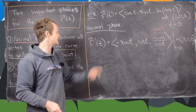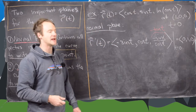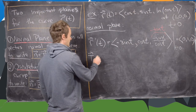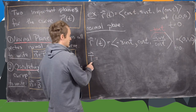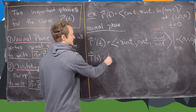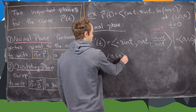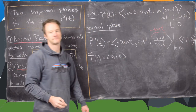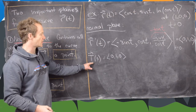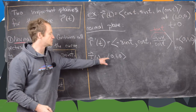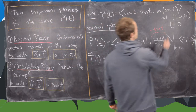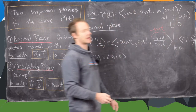This is already a unit vector, so we don't have to divide by anything. Our unit tangent vector at t equals 0 is (0, 1, 0). Now we need the equation of the plane whose normal vector is this vector and whose point is (1, 0, 0).